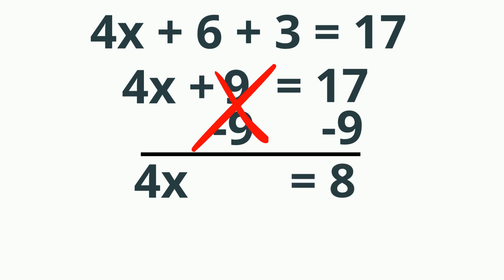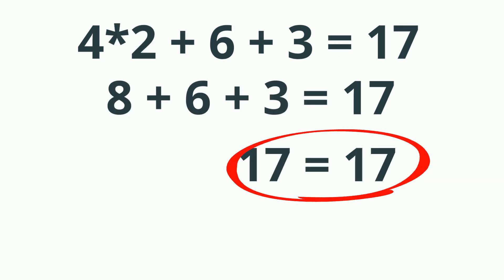Now I can undo the multiplication of 4x by dividing both sides by 4. So x equals 2. And you can see here when you plug it into the original equation, it does work out.